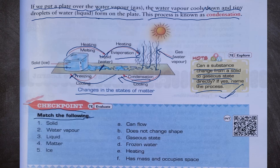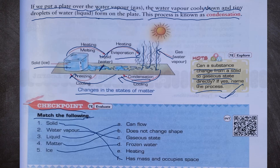Now checkpoint — match the following. Number 1, solid: solid has mass and occupies space. Number 2, water vapor: water vapor is the gaseous state. Number 3, liquid: liquid can flow. Number 4, matter: matter does not change shape. And ice is frozen water.